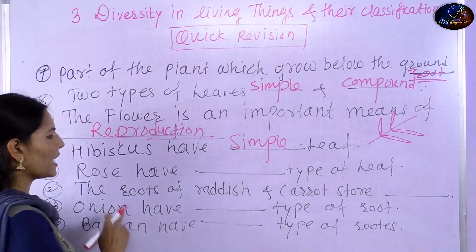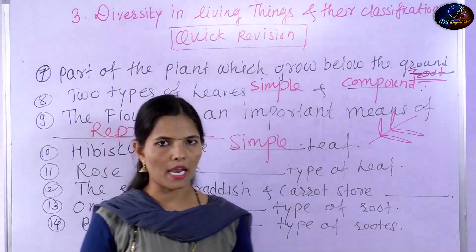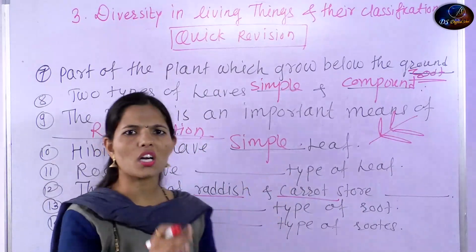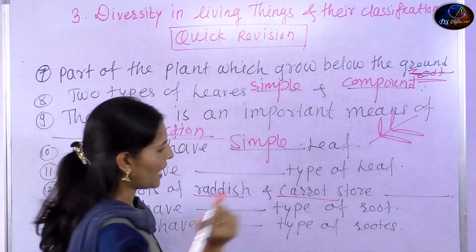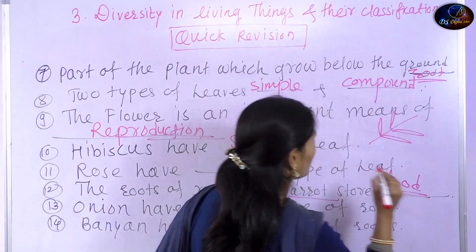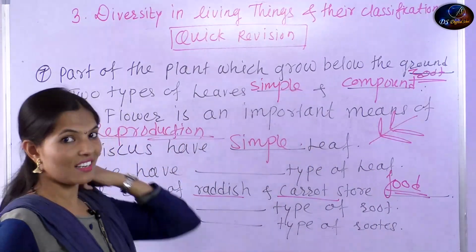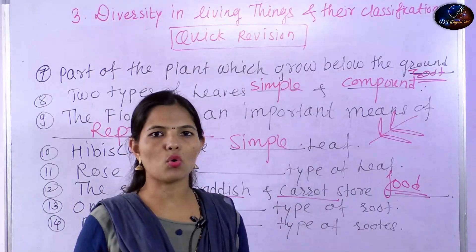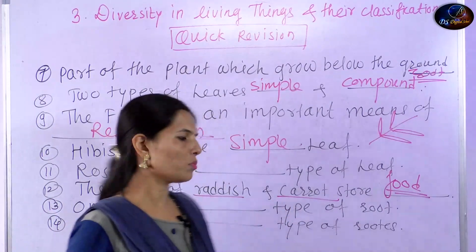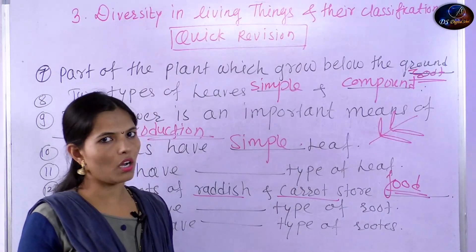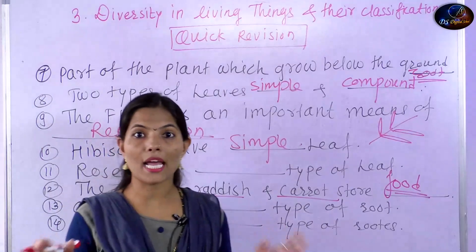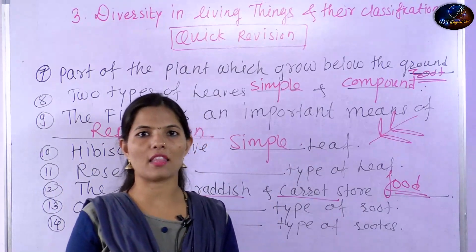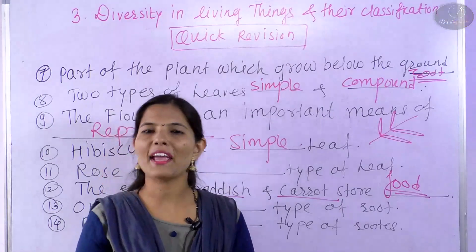The next question is about the roots of radish and carrot. Radish and carrot — what do they do? They store food in their roots. So they are called storage roots. Next question: onion has which type of root? All of you know — put your answer in the comment box. You can also write how many types of roots there are in the comment box.